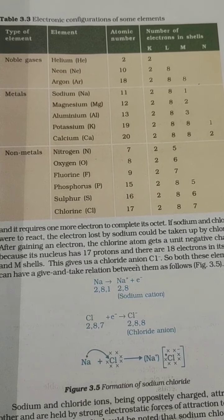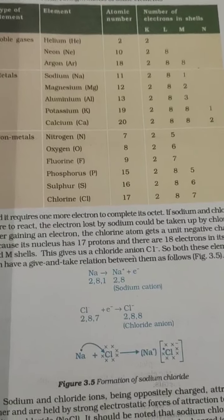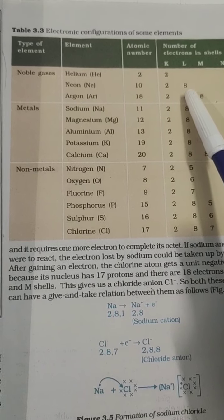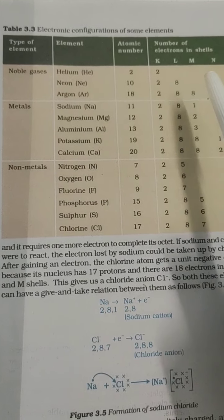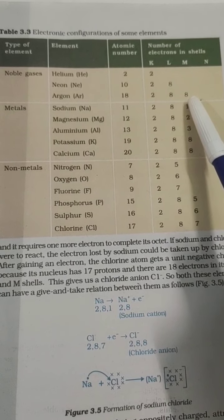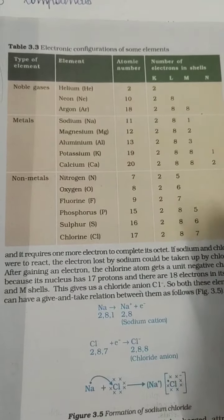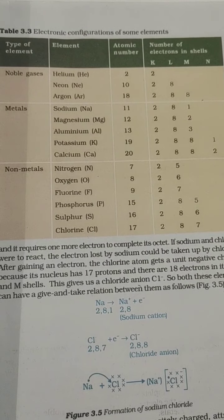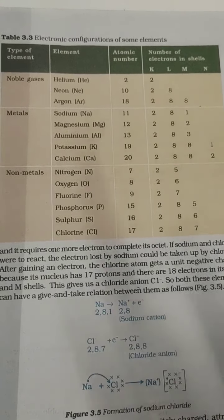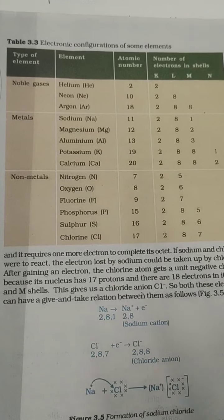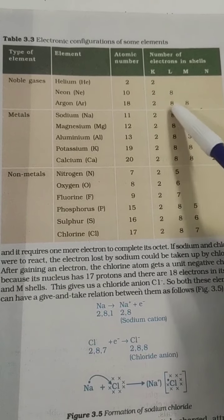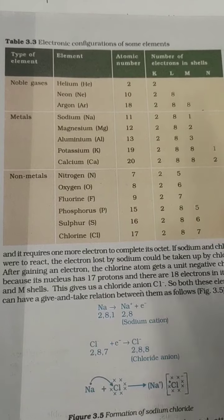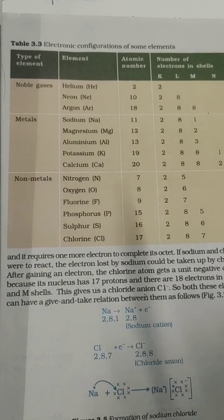Neon is having 2 and 8 in K and L shells. The L shell has a maximum of 8 electrons, and neon already has 8 electrons there, so its octet is also complete. Argon is having 2, 8 and 8, so it is also complete. These gases do not want any other electron to complete the octet structure. Neither will they donate electrons because they have nothing to give or to gain - they are self-sufficient. That is why they are called noble gases and do not react with any other element.